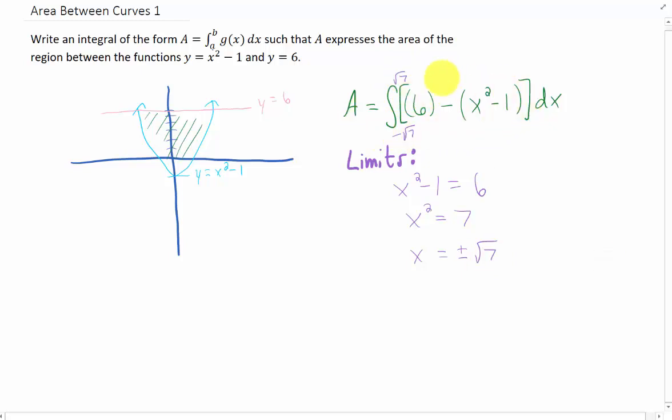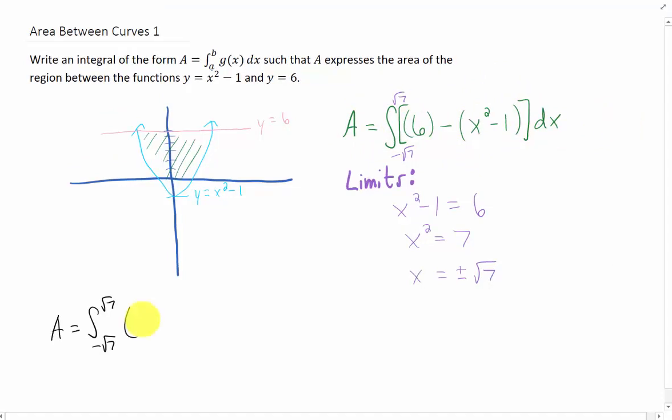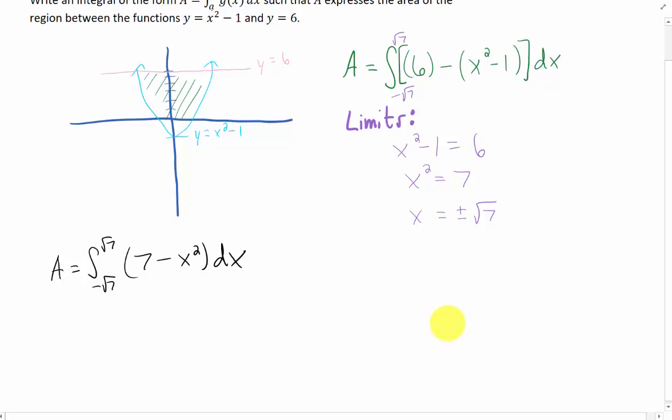Let's now take this integral and simplify it. Taking 6 - (x² - 1) gives us 7 - x². Integrating gives us (7x - (1/3)x³) evaluated from -√7 to √7.